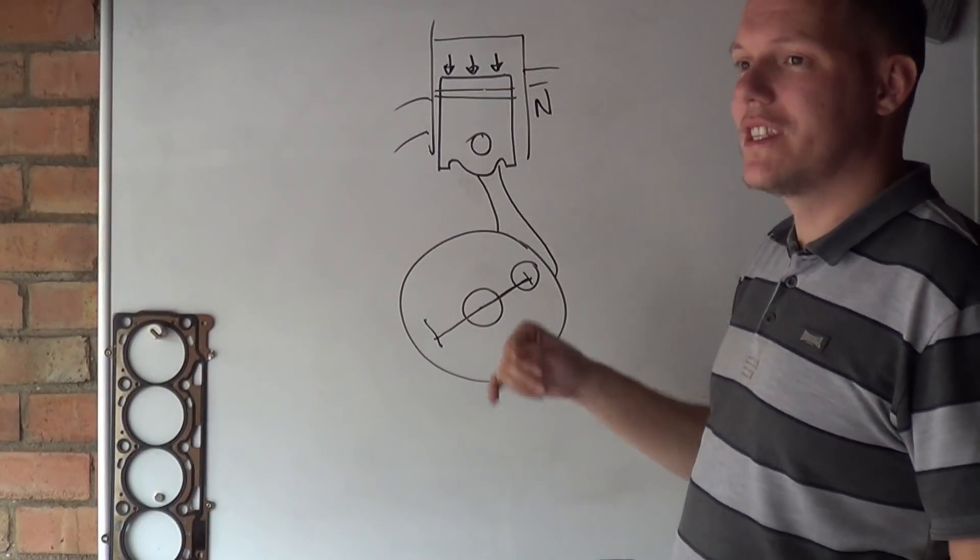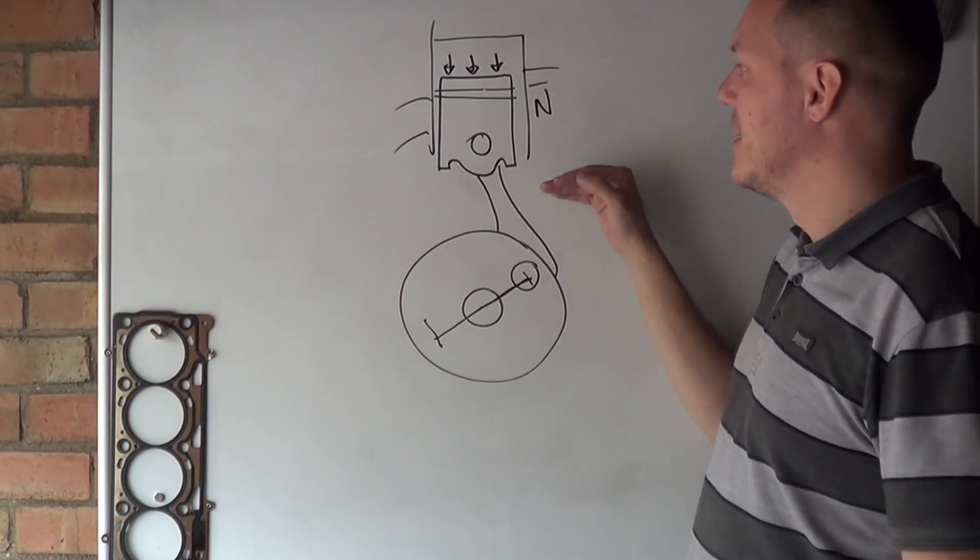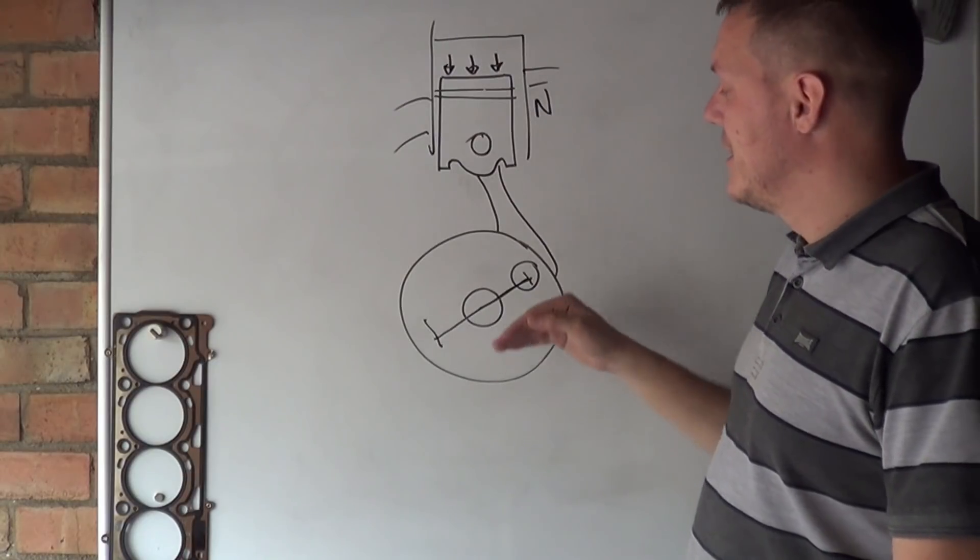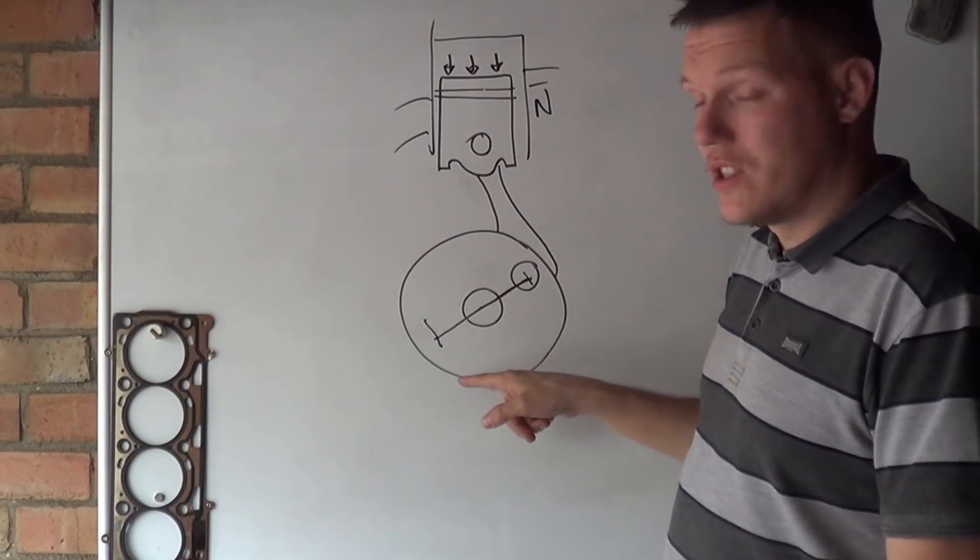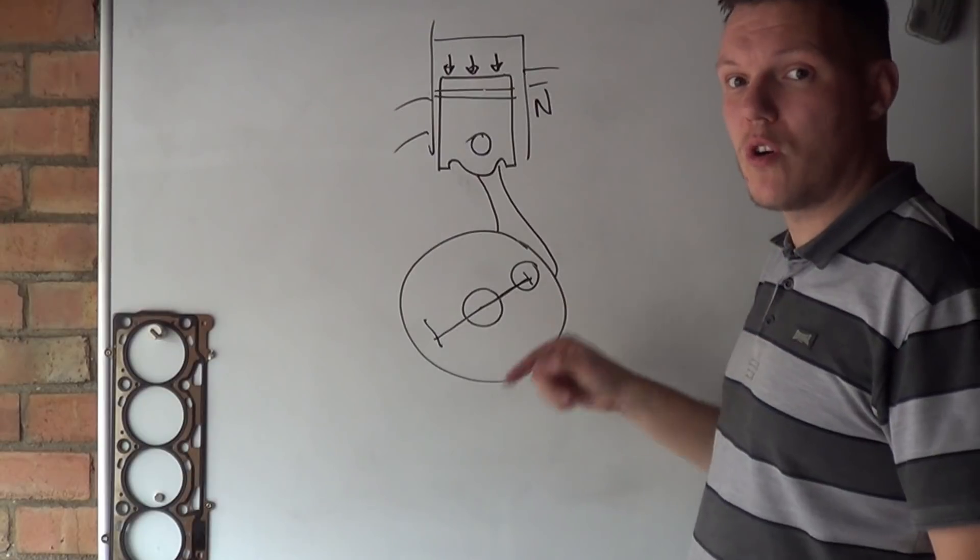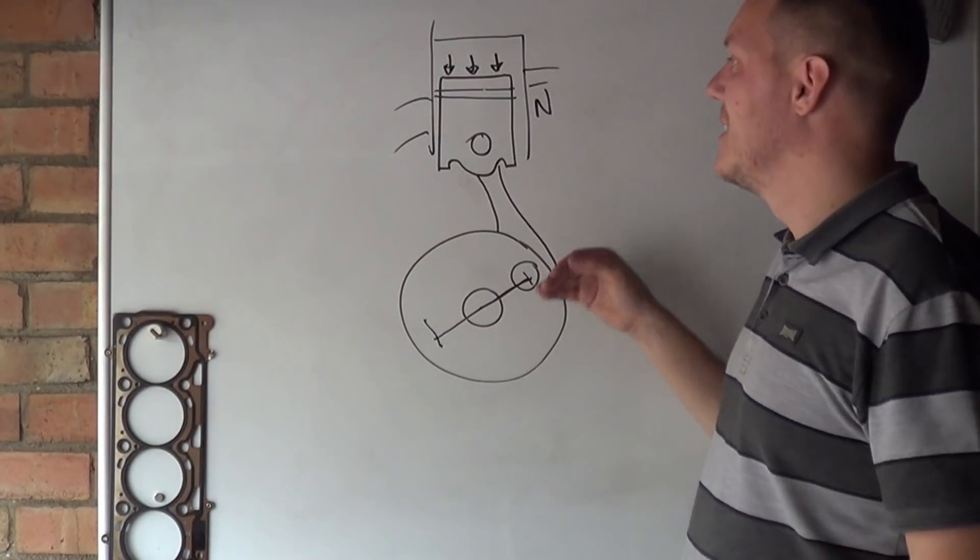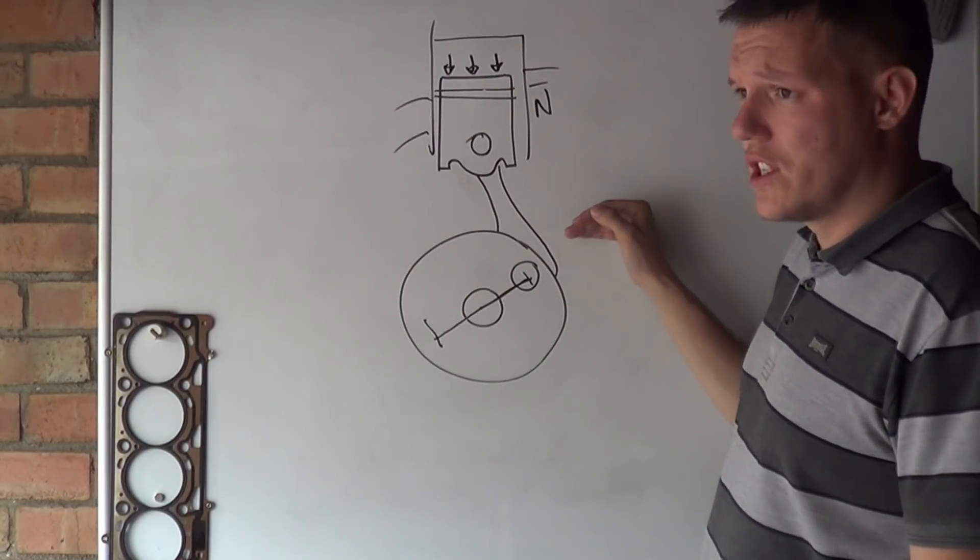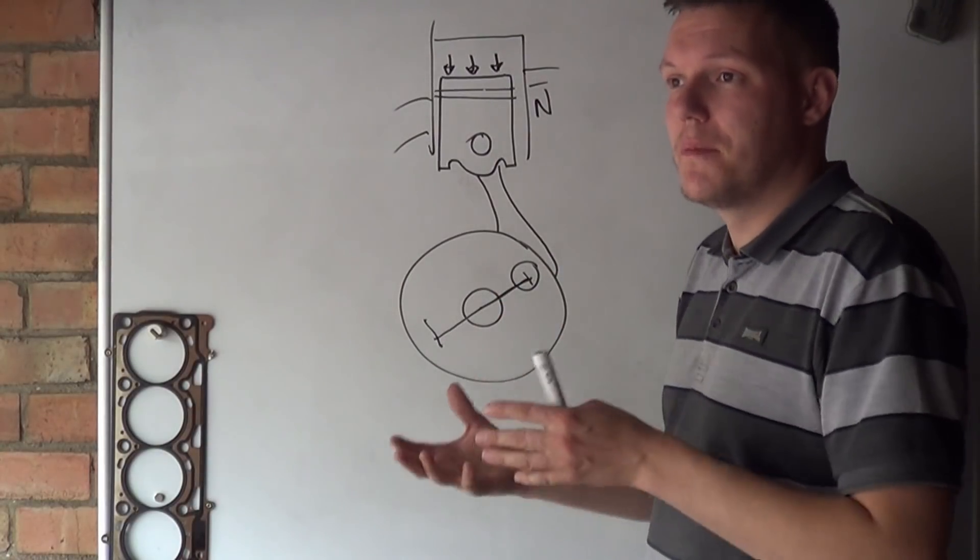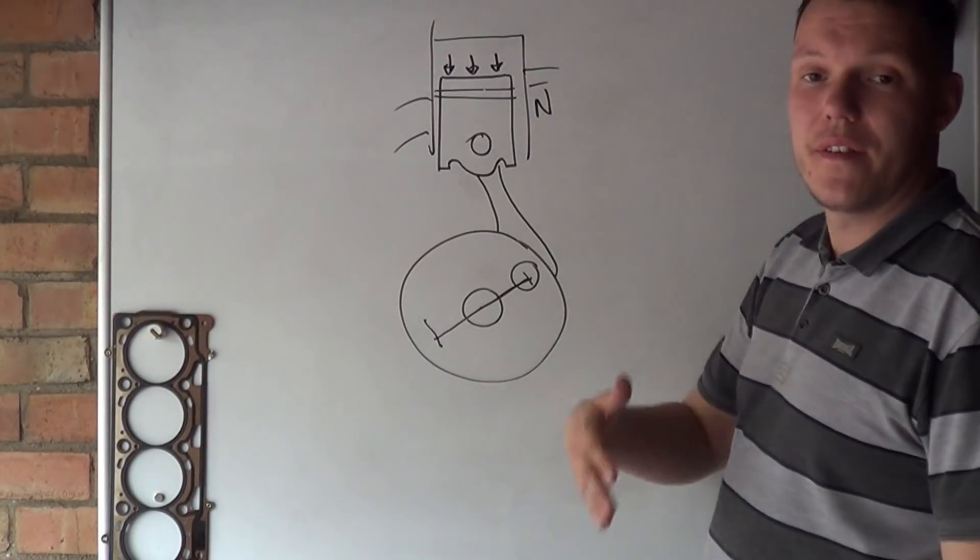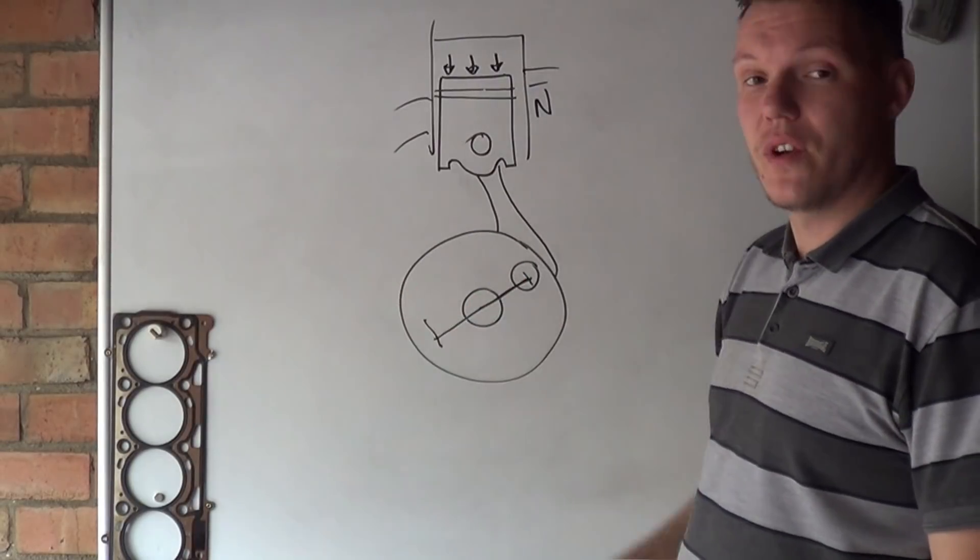Two-strokes can take advantage of the under-square system. They've got a light top end, the crankshaft holds inertia, they can produce torque, which is what they are lacking in a two-stroke, so the two-strokes tend to be more under-square than the four-strokes, which are going more for the over-square.